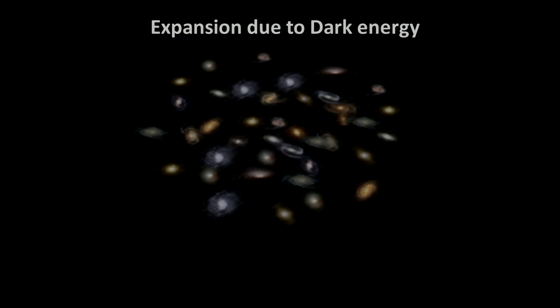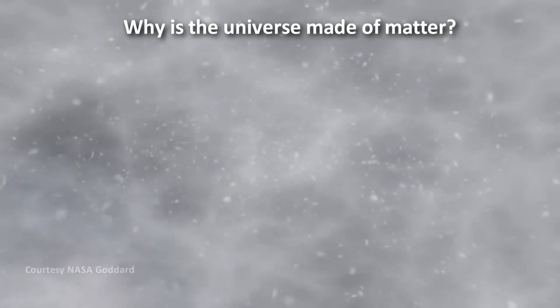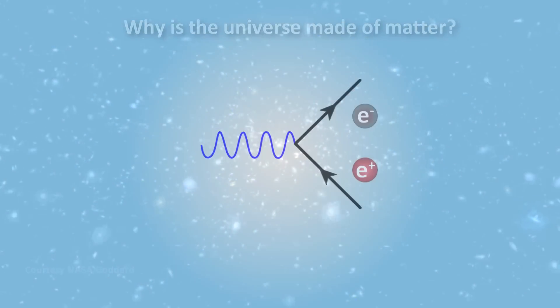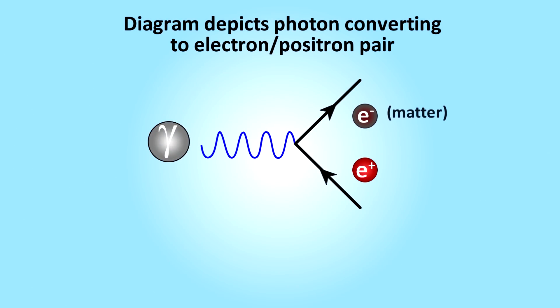And finally, there is the conundrum of the matter-antimatter asymmetry. We don't understand why the universe is made of matter. Einstein's theory of special relativity says that energy can turn into matter. But when energy turns into matter, it makes an equal amount of antimatter. And that's what we think must have happened after the big bang.